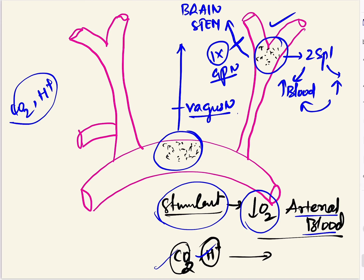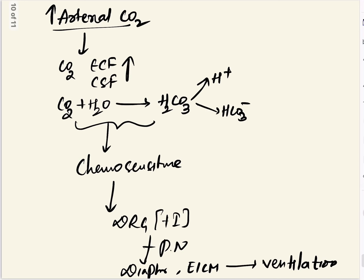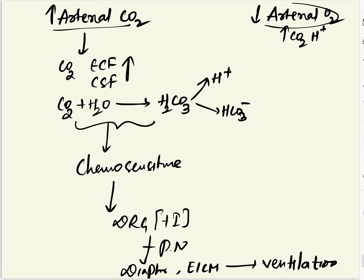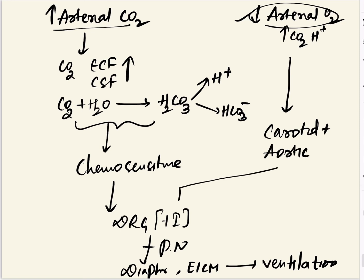Looking at the flow chart for peripheral chemoreceptor mechanism: decreased arterial oxygen or increased carbon dioxide and hydrogen ions — the main stimulant being decreased oxygen — are detected by the carotid and aortic chemoreceptors, which activate the dorsal respiratory group. Via the phrenic nerve, this acts on the diaphragm and causes ventilation. This covers chemical regulation by both central and peripheral chemoreceptors.